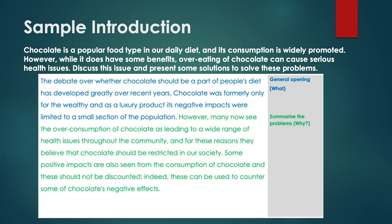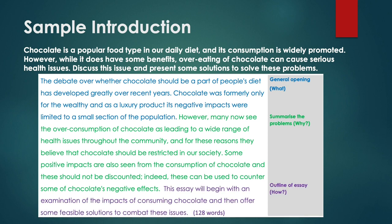Next, we have the why part in green. So now many more people eat chocolate and it has many negative health effects. There is a hint at a possible solution — restricting it — and the writer also mentions some positive impacts that might be part of the solution. The final part is the how, and that's in purple. That's the outline of the essay — it tells the reader how you're going to write the essay. In total it's 128 words. This introduction is fine; it's something you can adapt for your own essays.